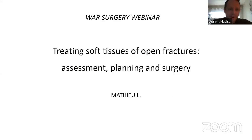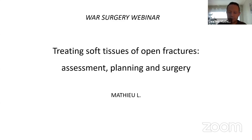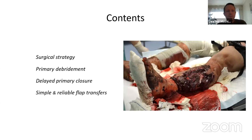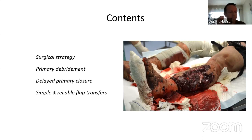Today we will talk about how to treat soft tissue in open fractures in a war context. We will see how to assess the wound, how to plan the coverage, and what are the principles of soft tissue coverage in these injuries. We will talk about surgical strategy, primary debridement, delayed primary closure, and the use of flap transfer — simple and reliable flap transfers that we can use in the austere environment of a forward surgical unit or improvised field hospital.